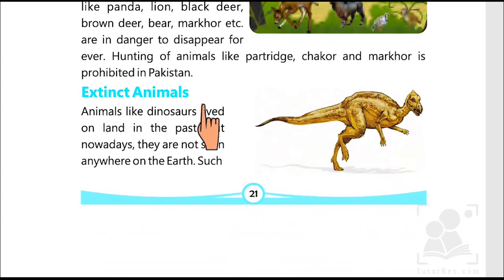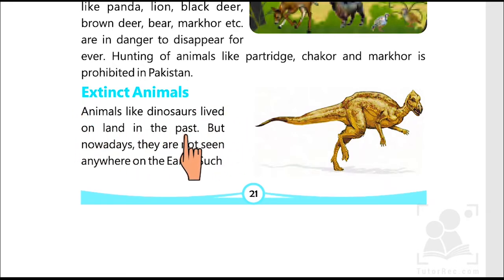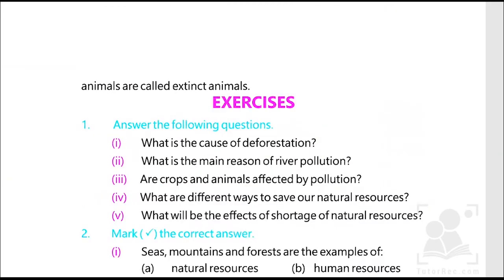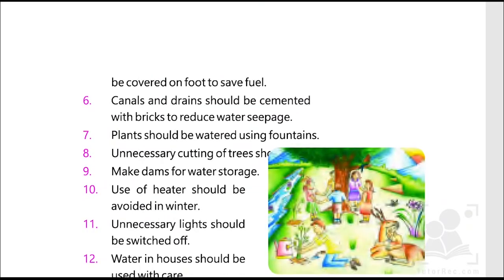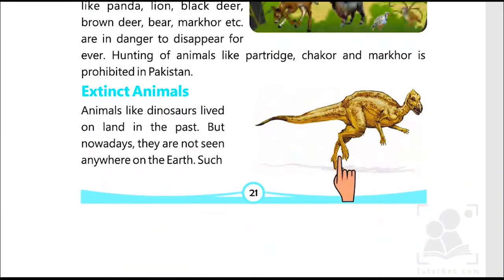Then come extinct animals. Extinct means past — they have been gone and don't exist on earth anymore. Animals like dinosaurs lived on land in the past, but nowadays they are not seen anywhere on earth. Such animals are called extinct animals. This is a very important unit about conservation of natural resources, and we have been told 12 different ways to save them. You should start saving your natural resources from today onwards.